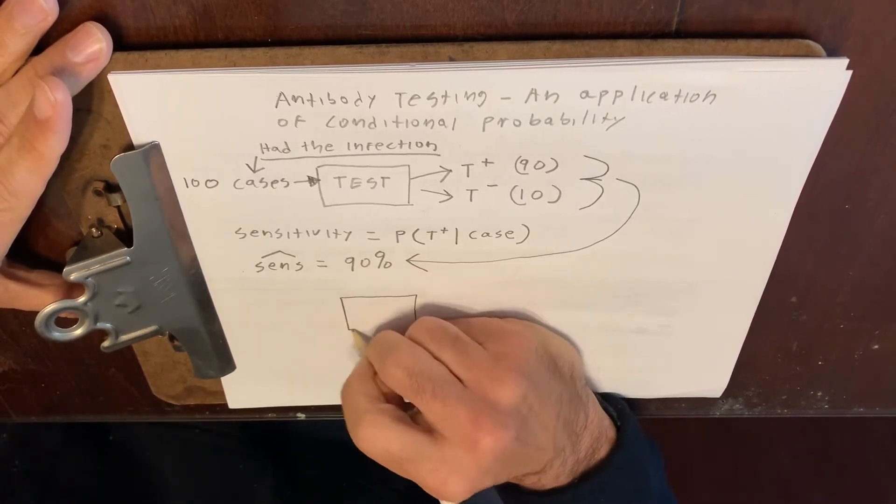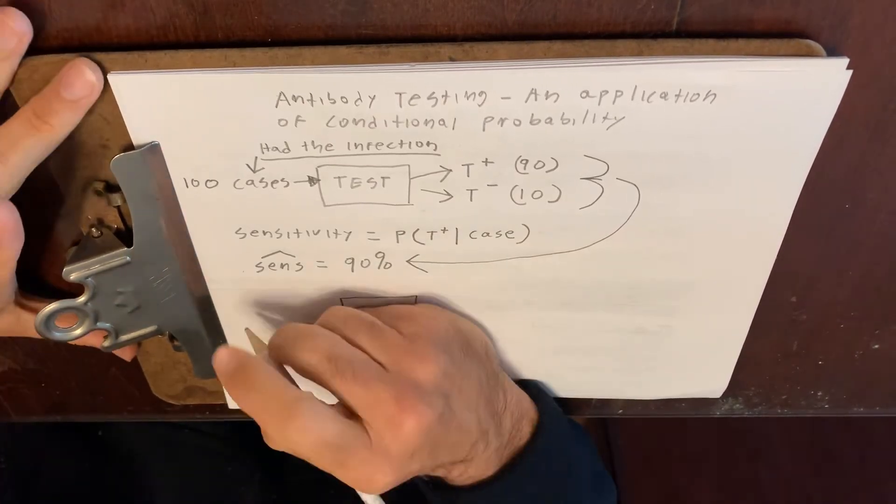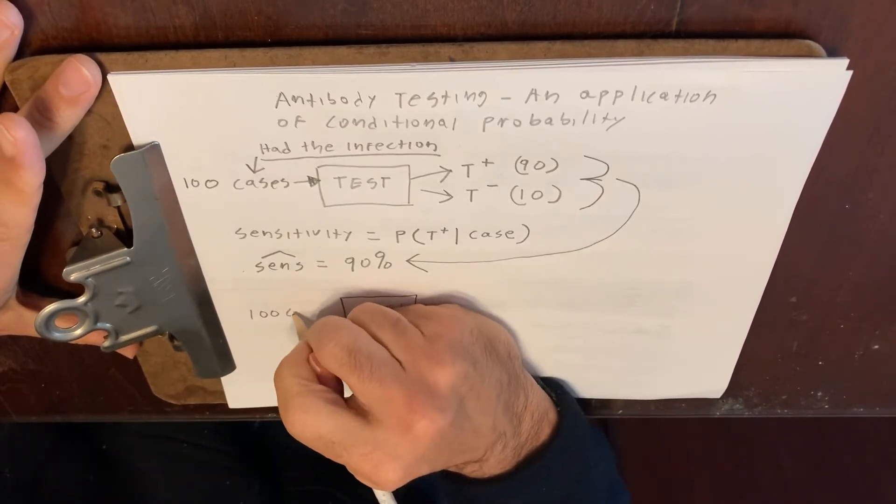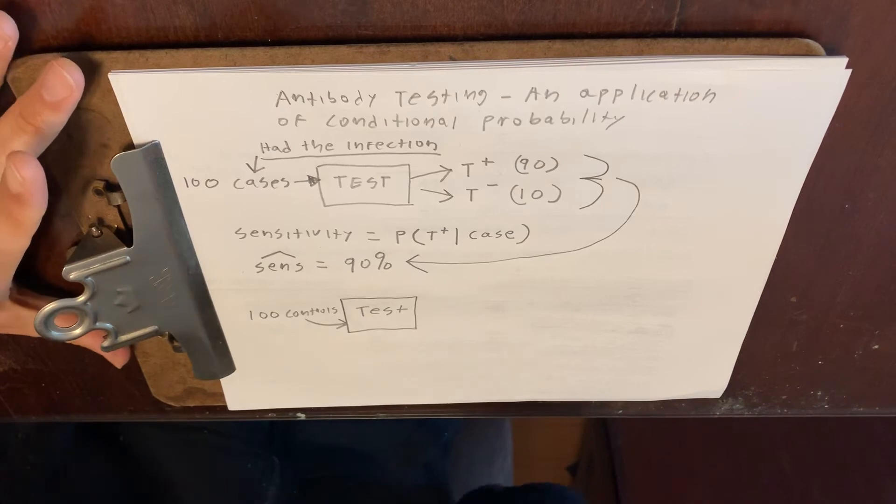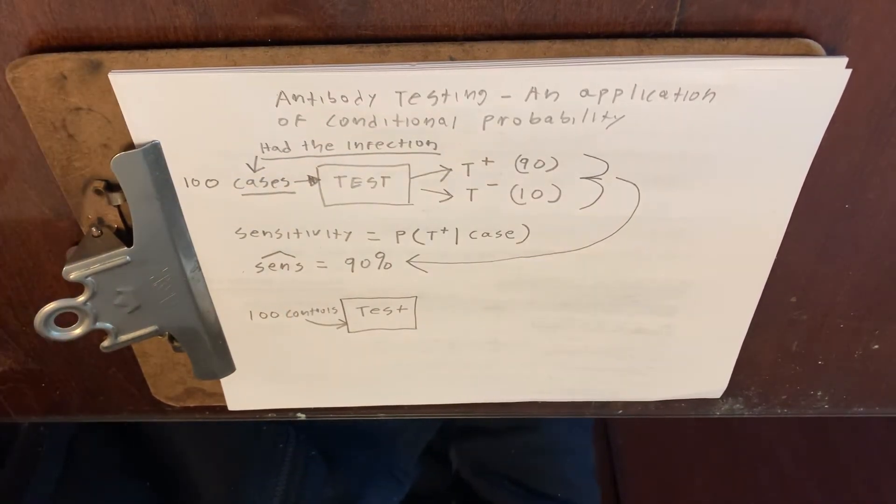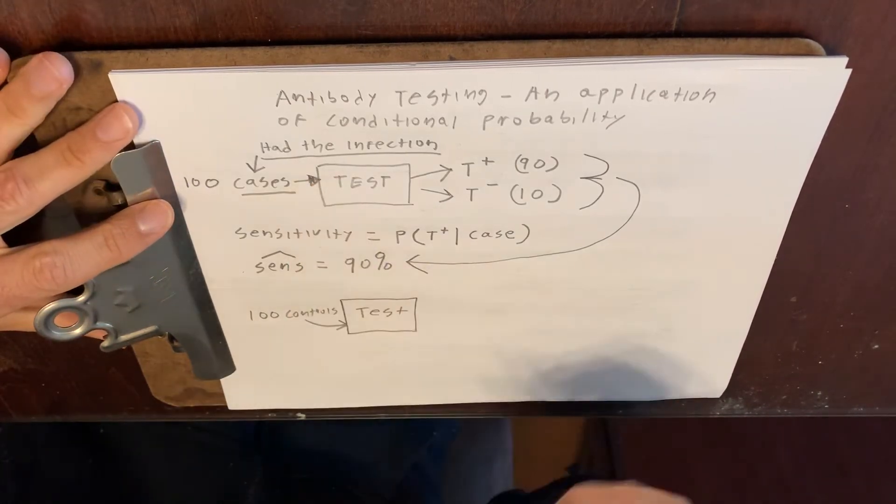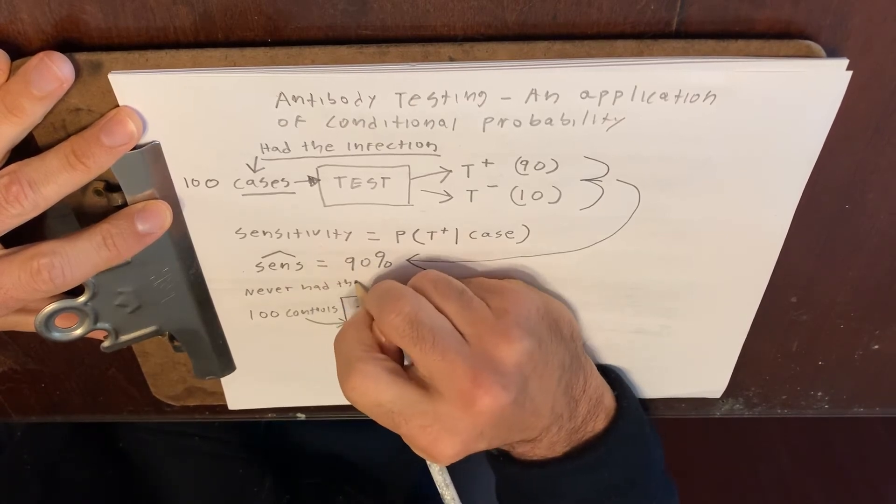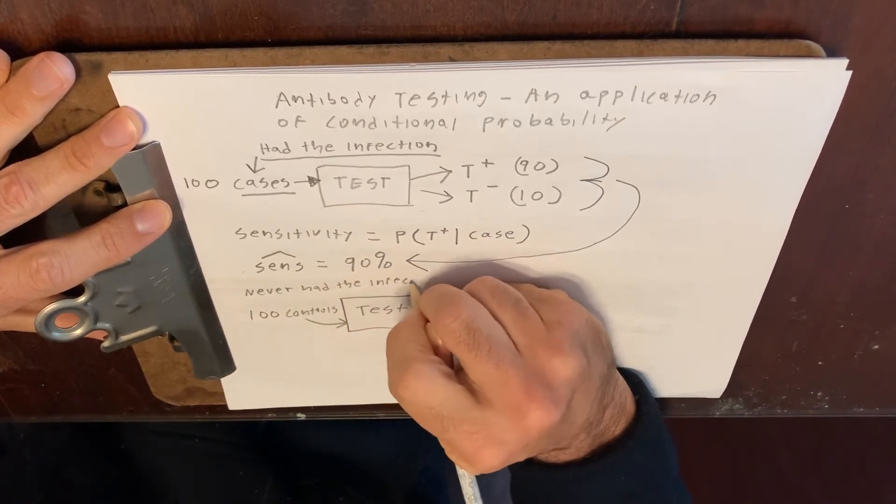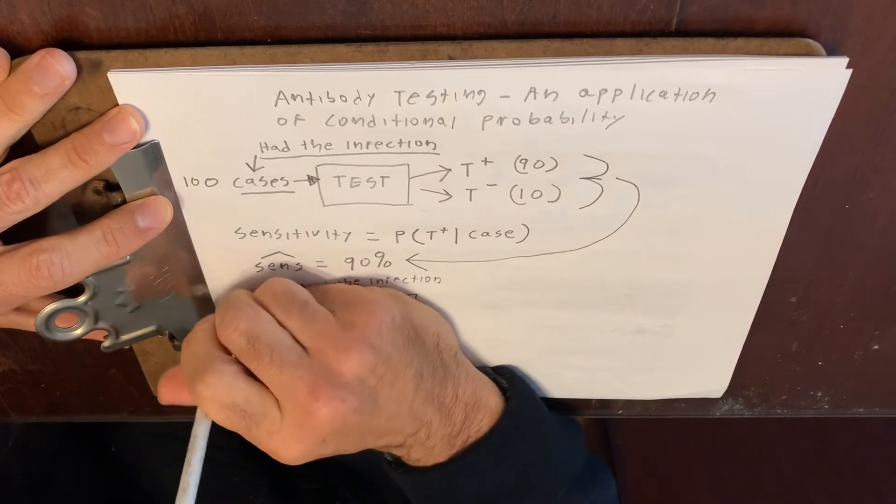We take the same test. And now, making the math as easy as possible, let's say we take a hundred controls and give a hundred controls the test. Now, I defined what a case was. Think for a moment, what do you think a control would be in this context? Pause the video for a second. Welcome back. Okay. So, a control would be someone that never had the infection.